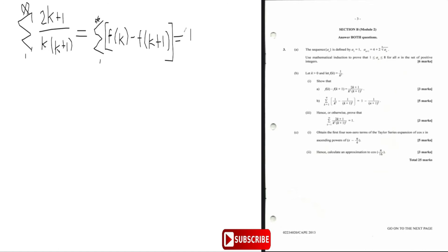So this is going to be one minus one over n plus one all squared, but now we plug in n as infinity. Infinity plus one all squared is infinity, and one over infinity is zero. So the sum works out to be one minus zero, and one minus zero is one. Hence the summation equals one.